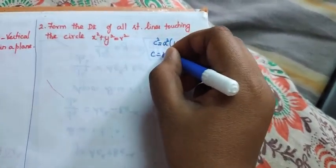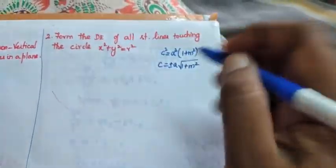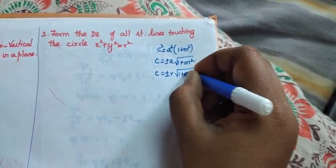So, c equals plus or minus a into root of 1 plus m squared. Here the radius is r. So, c equals plus or minus r root of 1 plus m squared.